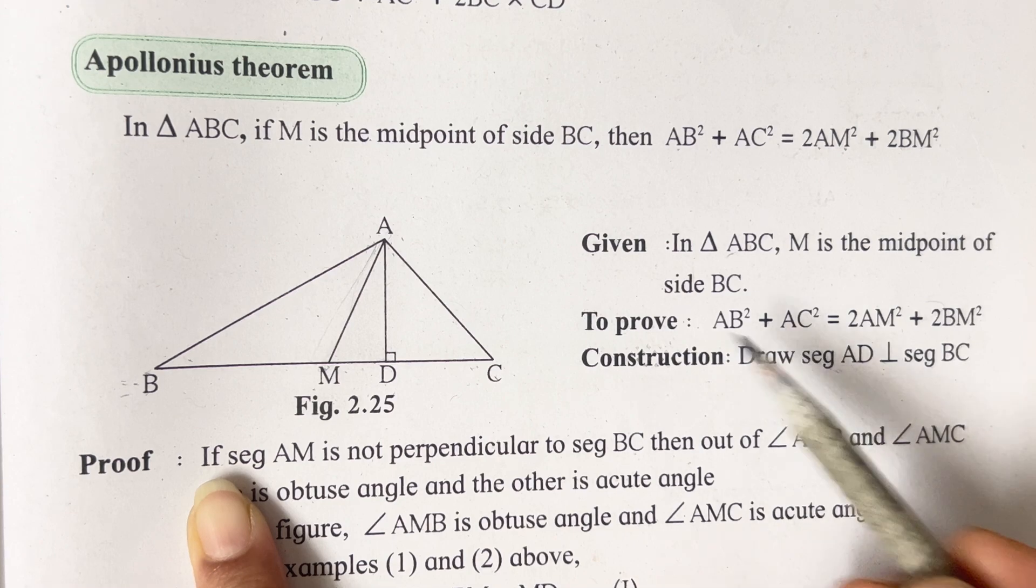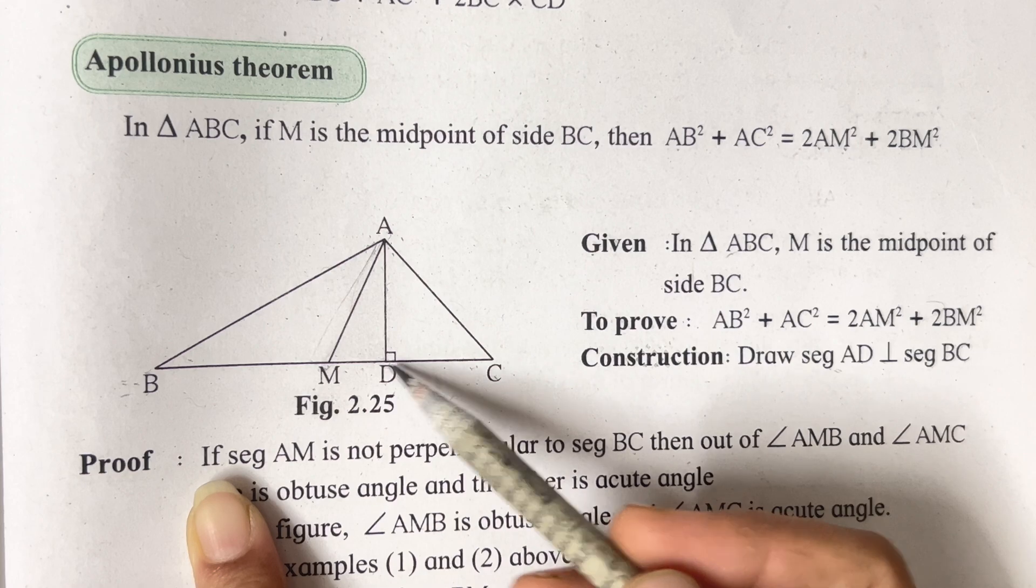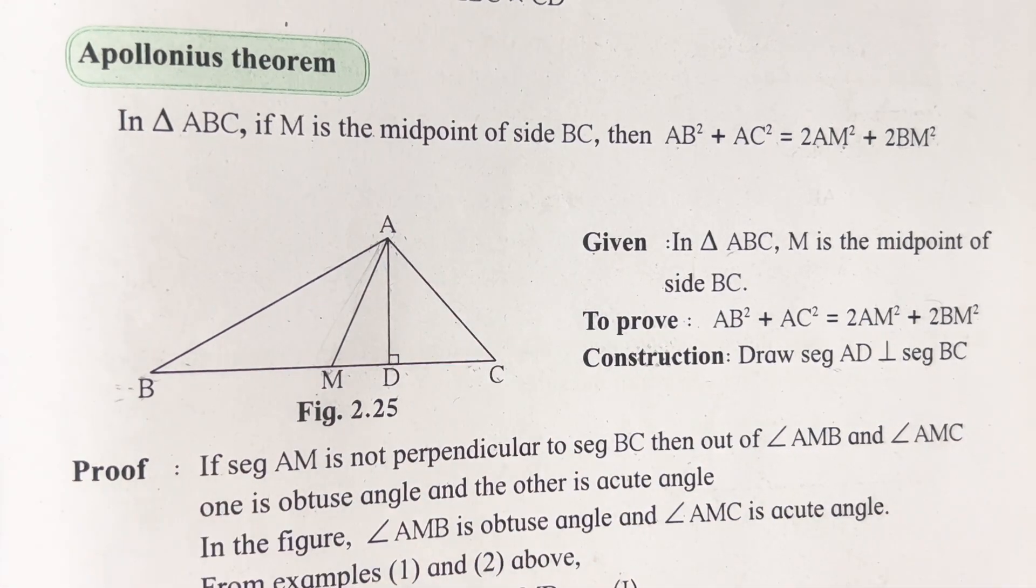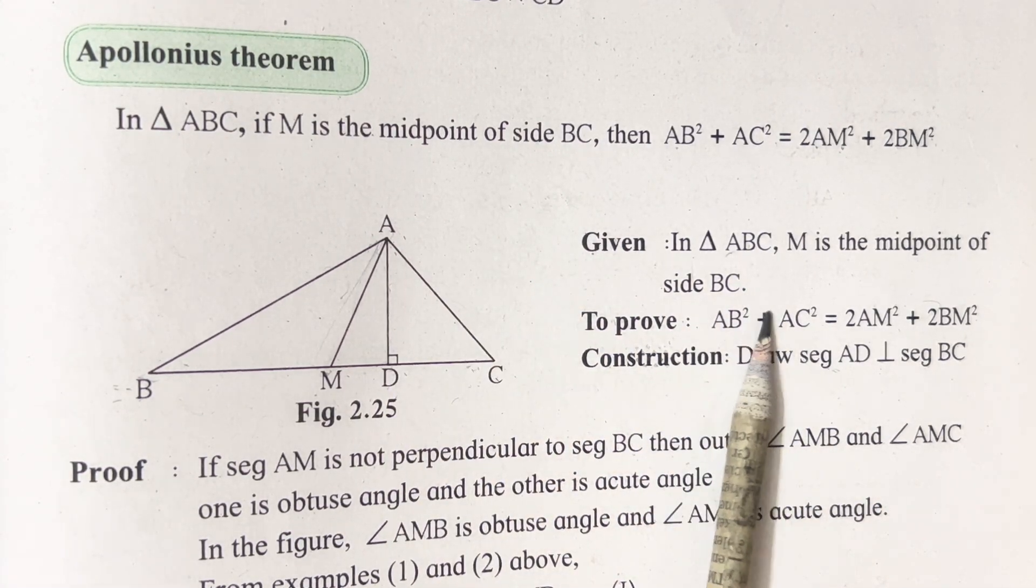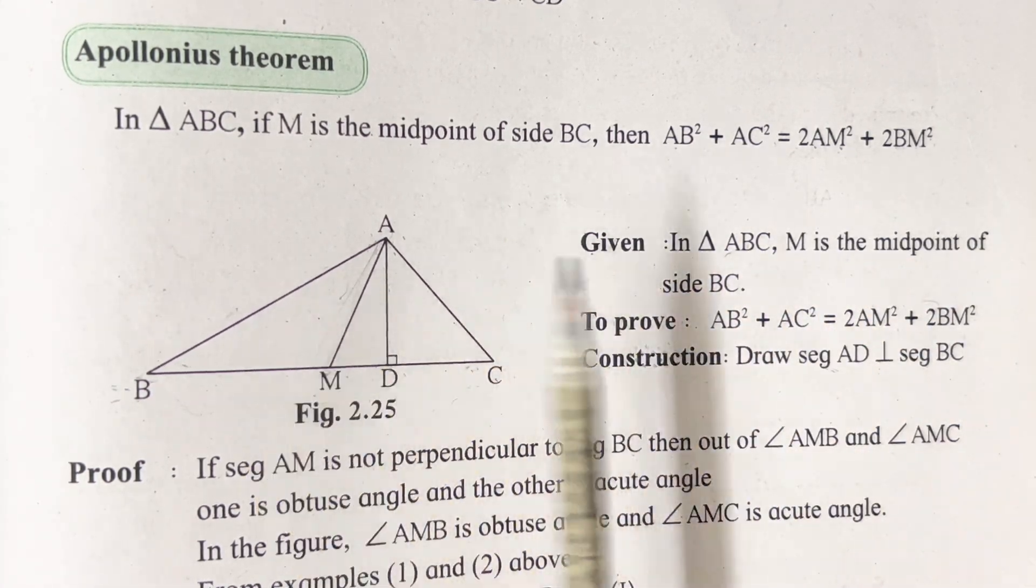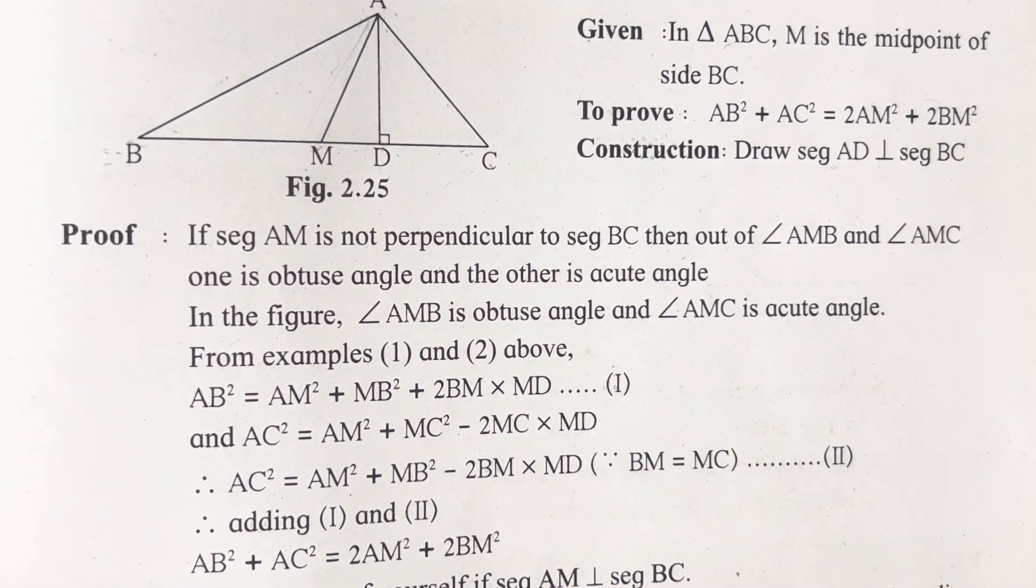Now comes the construction. As I said, you have to construct a perpendicular AD which is perpendicular to the segment BC. I think these three points are clear. From the diagram only, you have to refer and write it. Make sure you draw the diagram just in front of given, to prove, and construction.